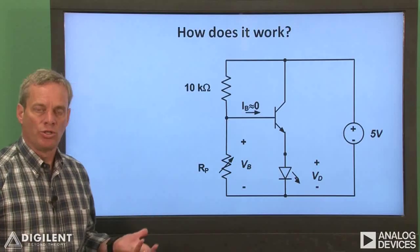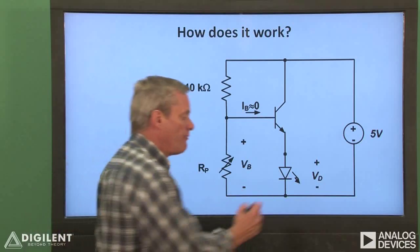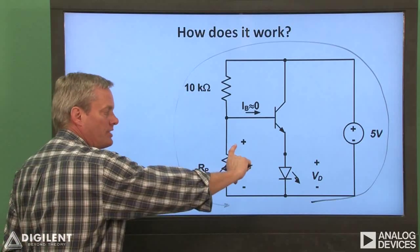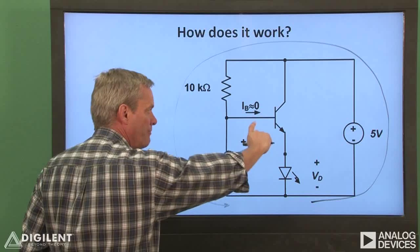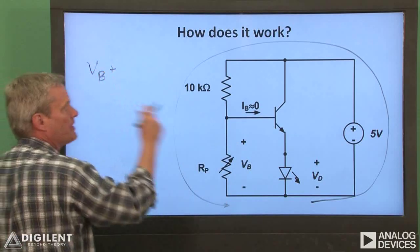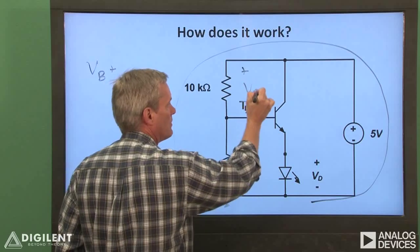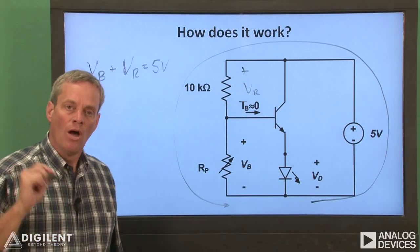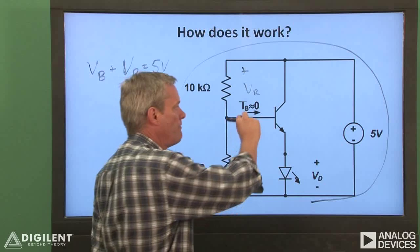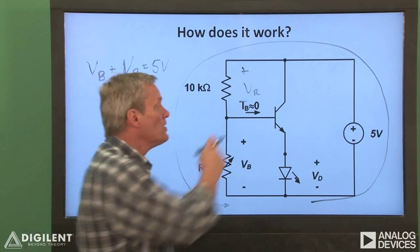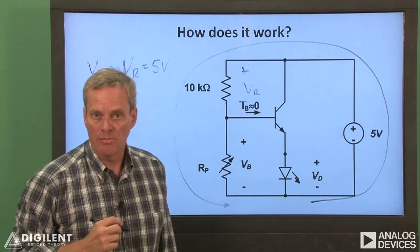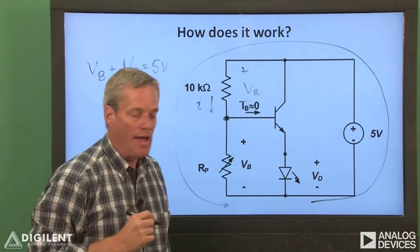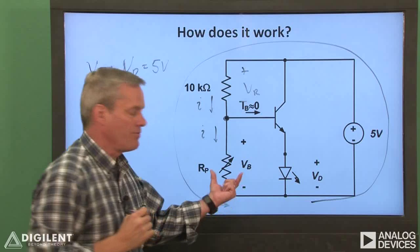Now let's take a closer look at how this circuit works. If we do KVL around the outermost loop, we see that the voltage across this resistor — which is also the base voltage of the BJT, V sub B — plus the voltage across our fixed resistor, V sub R, is equal to the total voltage applied, 5 volts. One property of BJTs is that very little current generally flows into their base, so we can assume that the current going in this direction is approximately zero. Doing KCL at this node shows us that the current through this resistor, I, is approximately the same as the current through the photocell.